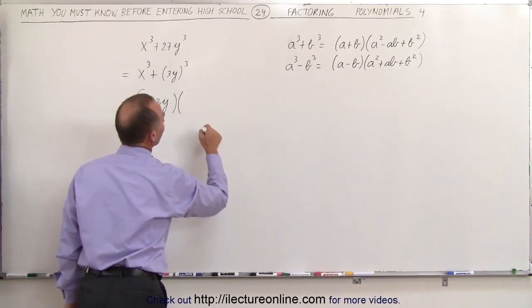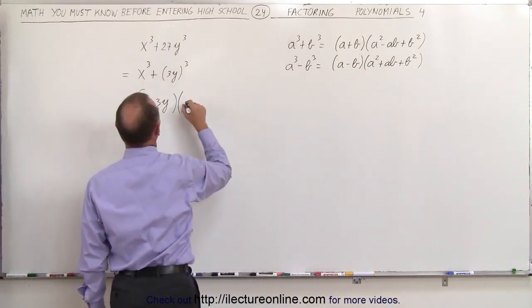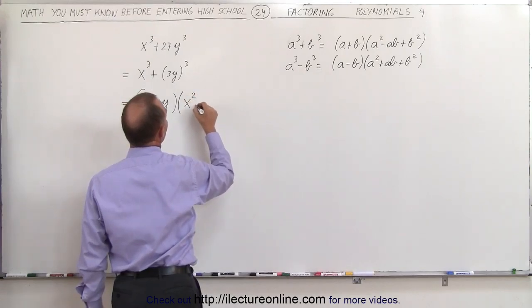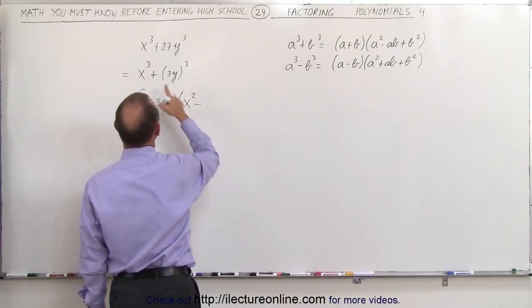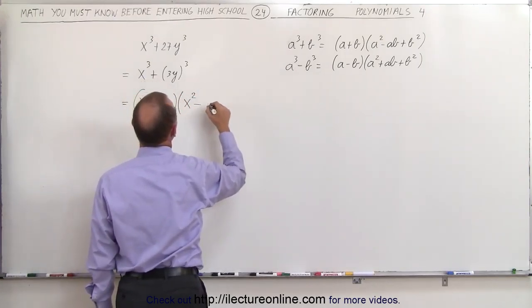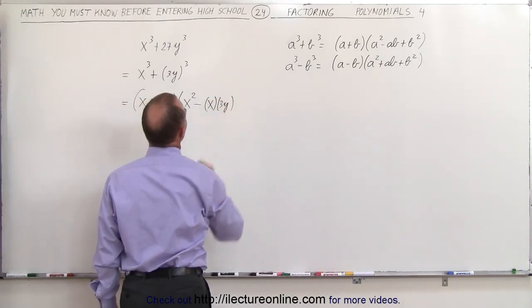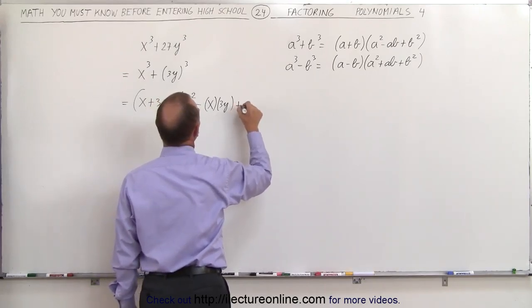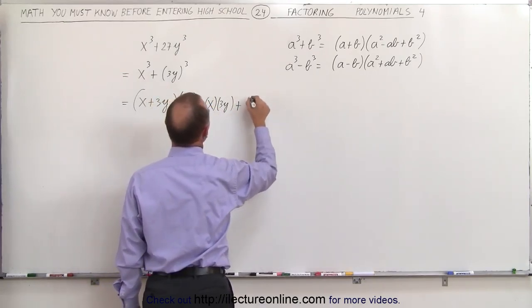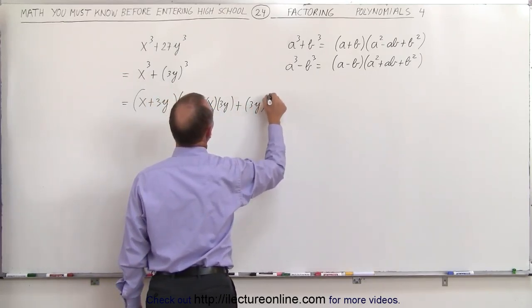Times a squared, in this case a is x, so that's x squared, minus a times b, x times 3y, so x times 3y, and then finally plus b squared, and since b is 3y, that would be 3y squared.